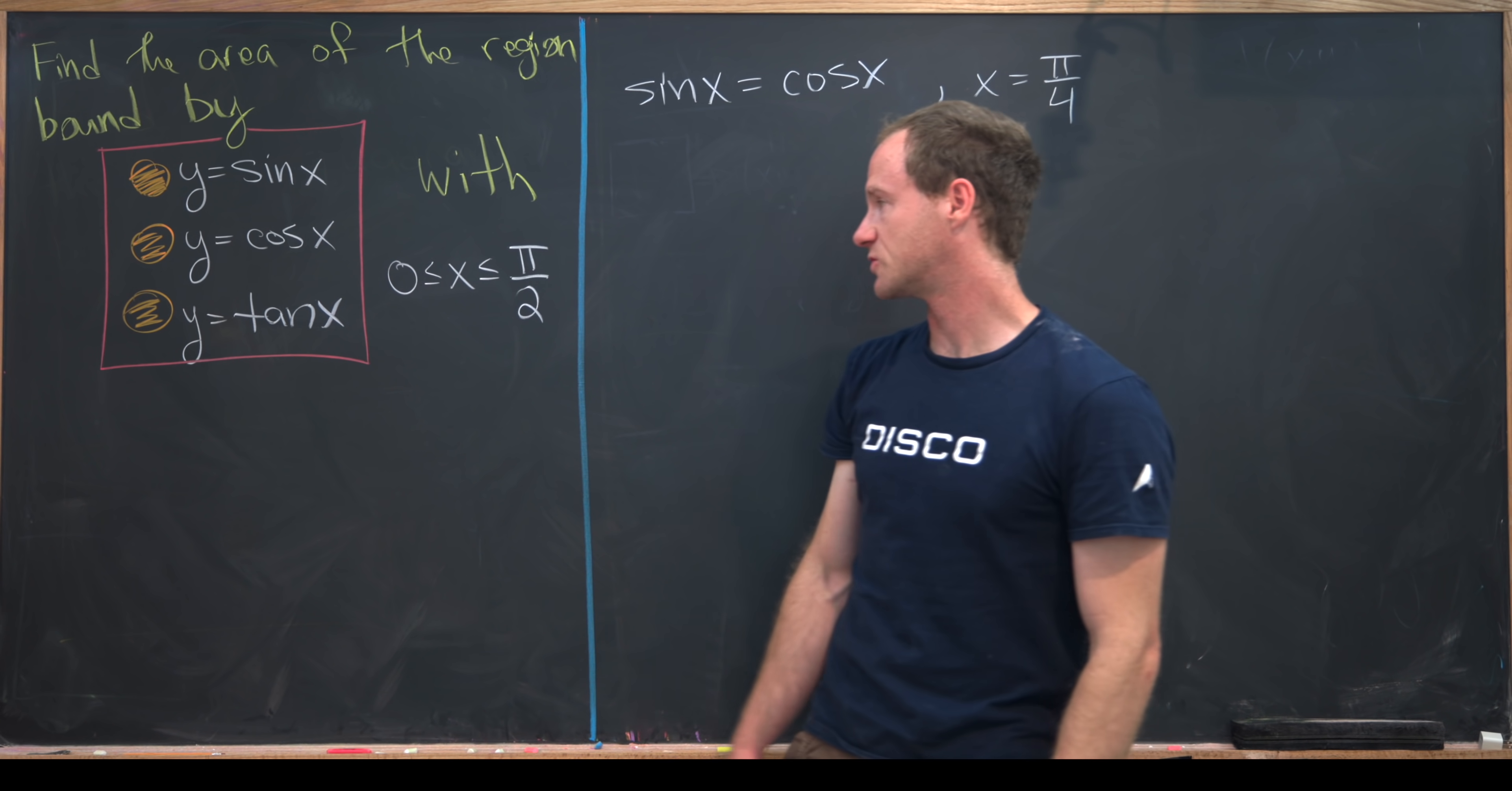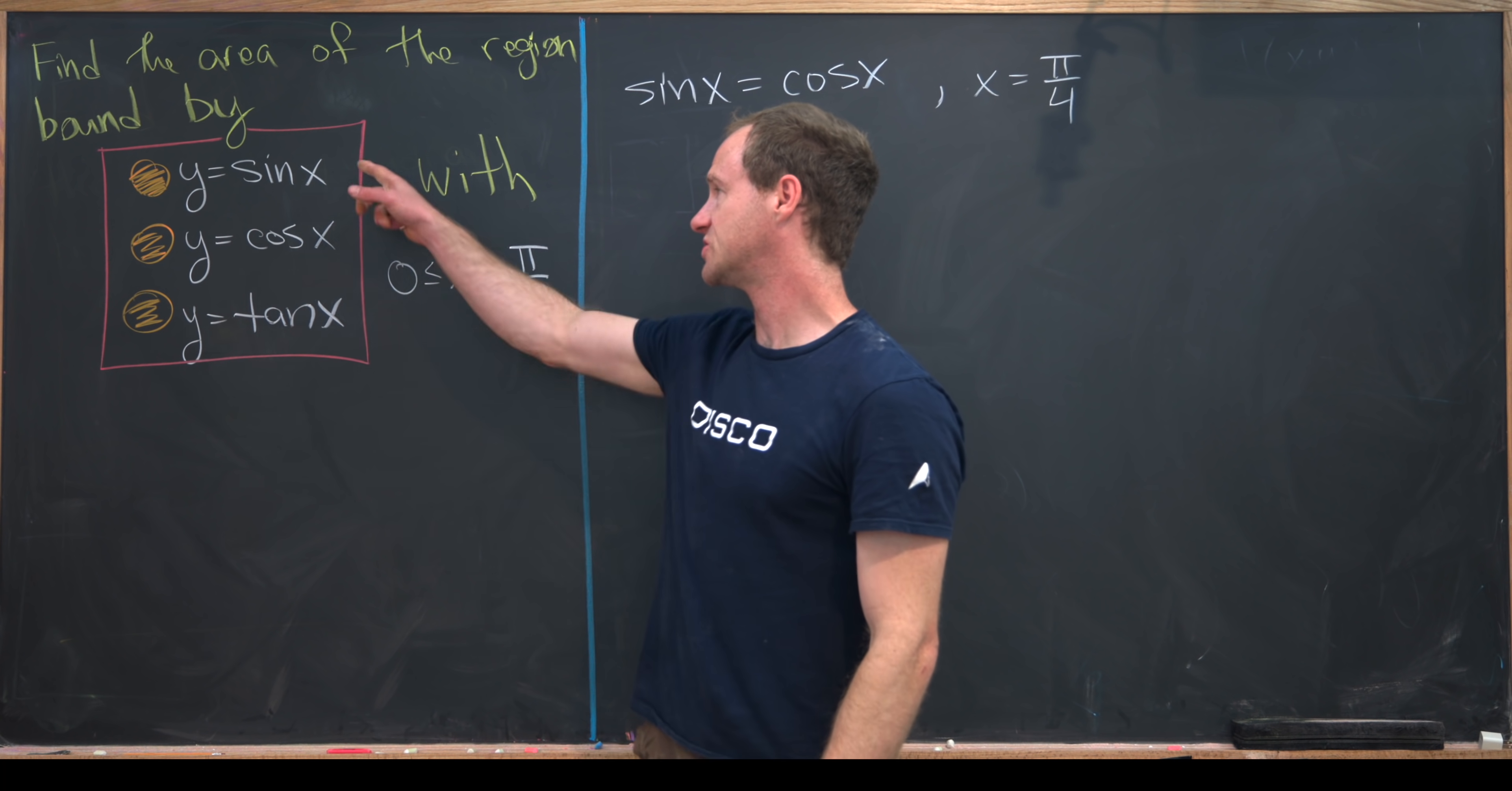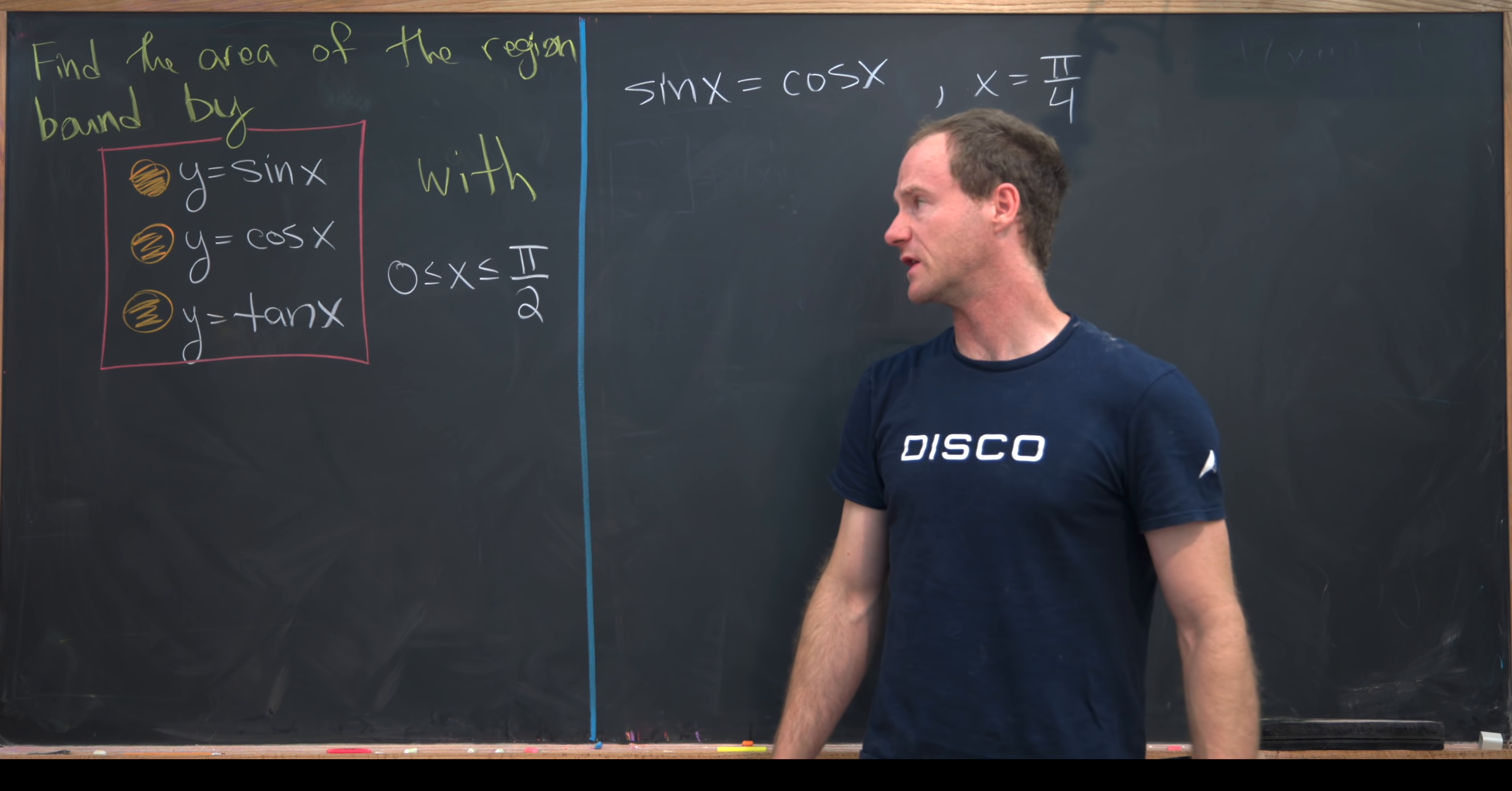Next, we want to look at the intersection point of tangent with cosine. I'll let you guys check that tangent and sine intersect at 0, so there's nothing really to do there.